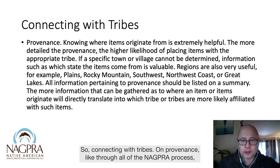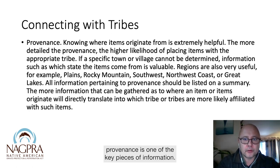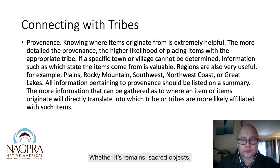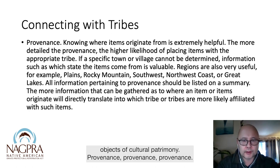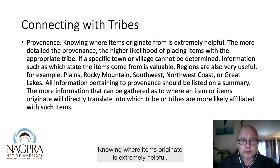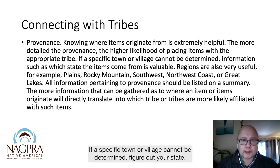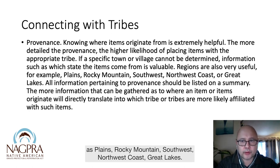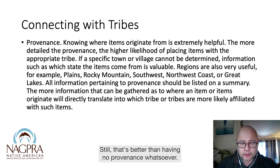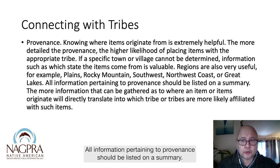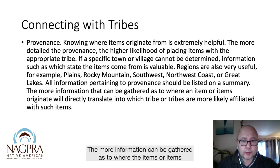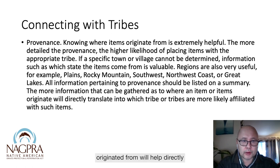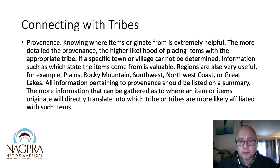Provenience — like through all of the NAGPRA process — is one of the key pieces of information, whether it's remains, sacred objects, or objects of cultural patrimony. Knowing where items originate is extremely helpful. The more detailed the provenience, the higher likelihood of placing items with the appropriate tribe. If a specific town or village cannot be determined, figure out your state. But if you don't have that, you can go by region — Plains, Rocky Mountain, Southwest, Northwest Coast, Great Lakes. That's better than having no provenience whatsoever. All information pertaining to provenience should be listed on a summary.